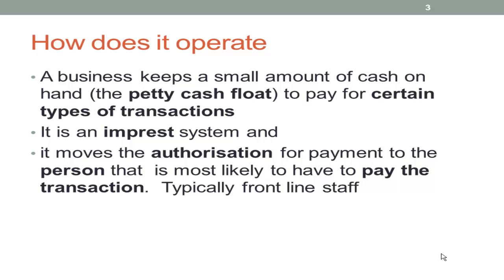To operate the system, a business keeps a small amount of cash on hand, typically referred to as the Petty Cash float, to pay for certain types of transactions. These are typically low in value and not practical to pay for in another way — for example, a staff member going out to buy coffee or tea, or low-value items. It moves the authority for payment to the person most likely to have to pay the transaction, typically your frontline staff.